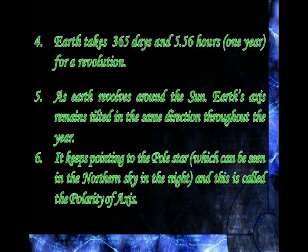Earth takes 365 days and 5.56 hours for one revolution. As the earth revolves around the sun, its axis remains tilted in the same direction throughout the year. It keeps pointing to the pole star, which can be seen in the northern sky at night. This is called the polarity of the axis.